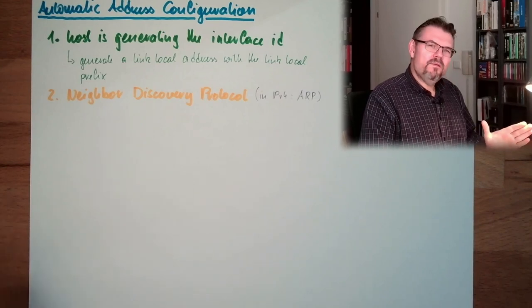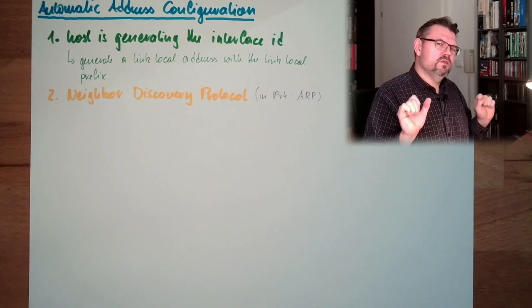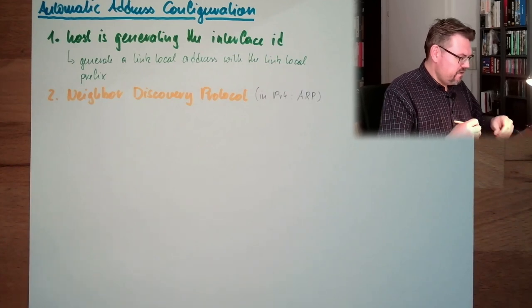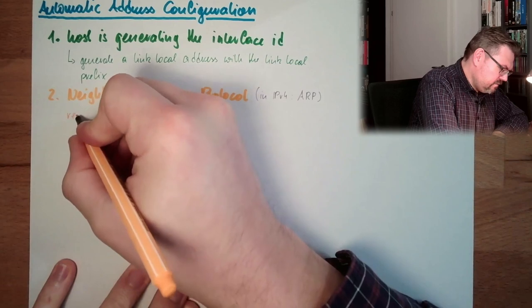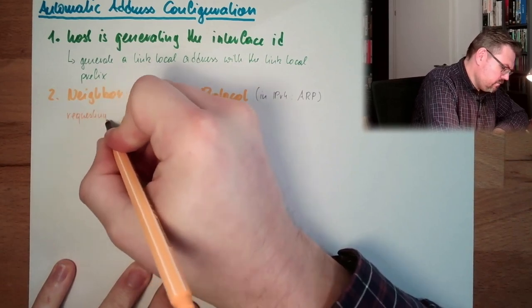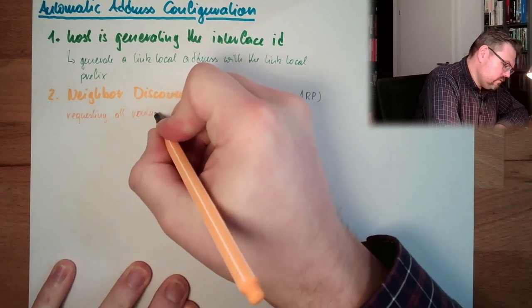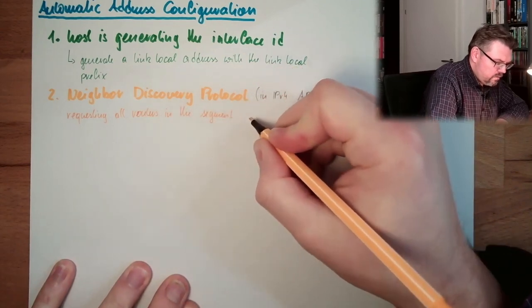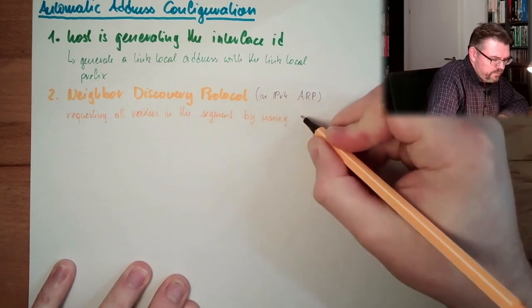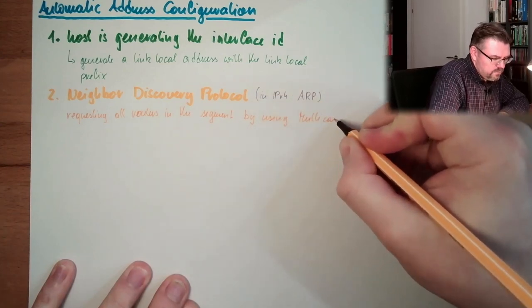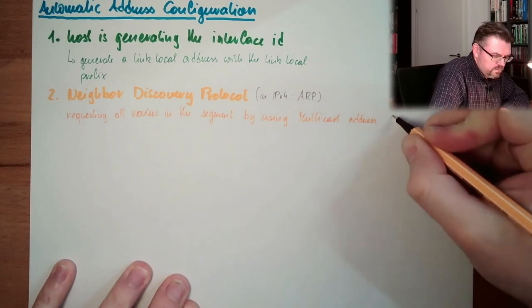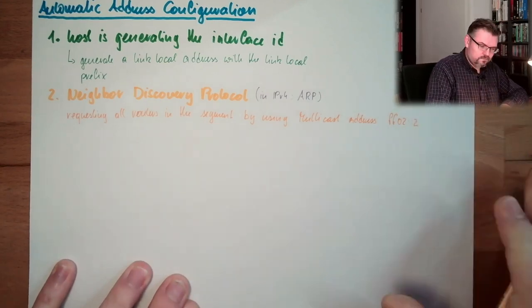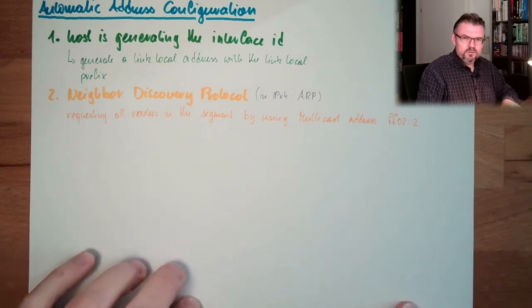What is done here? We have an address and now we are requesting all available routers to respond. And then we talked about a multicast. So we are requesting all routers in the segment by using multicast address. This means, please routers, please respond.